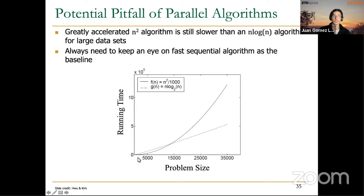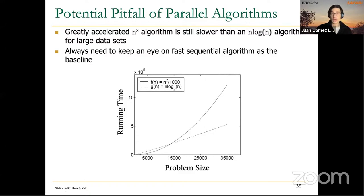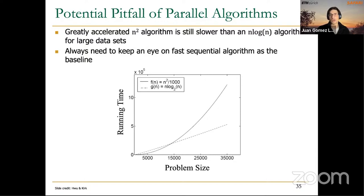But at a certain point, the n log n running time increases linearly while the n² algorithm increases quadratically. So for large problem sizes, n² algorithms are a poor choice. This is something that may happen when implementing parallel algorithms on GPU, especially for irregular algorithms like graph processing.